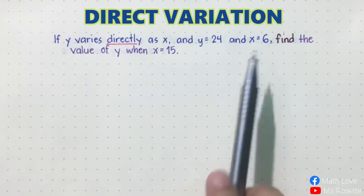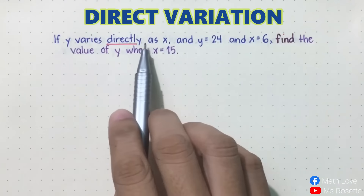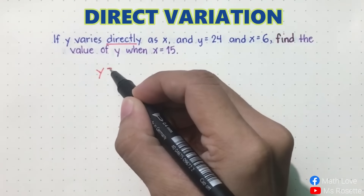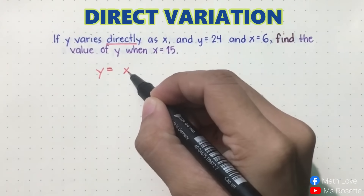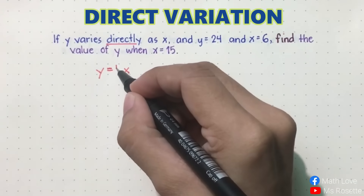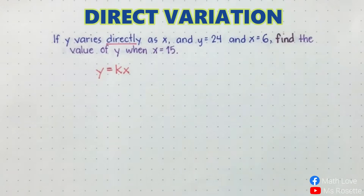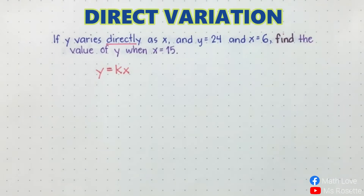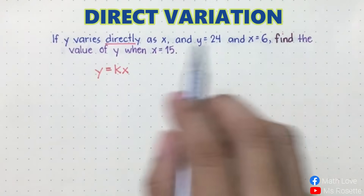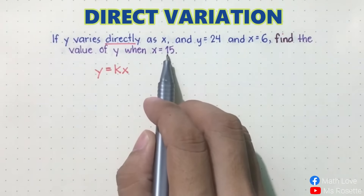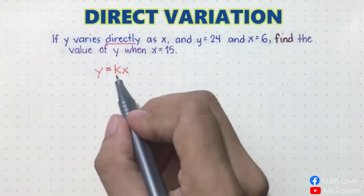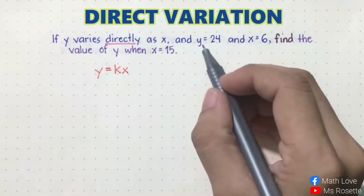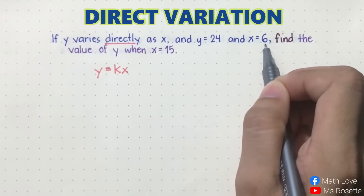In direct variation, if y varies directly as x, the equation will be y equals kx, where k is the constant of variation. We have to find the value of y when x is equal to 15. But before that, we have to find the value of the constant first using the first two given values, which are y is equal to 24 and x is equal to 6.